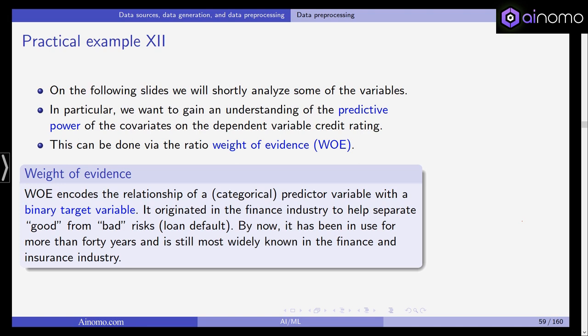The weight of evidence encodes the relation between a categorical predictor variable with a binary target variable. In our case, the binary target variable is good rating versus bad rating, and we have numerous predictor variables which need to be categorical. This weight of evidence ratio originated in the finance industry to separate good from bad risks. It has been in use for more than forty years and is still most widely known in the finance and insurance industry.